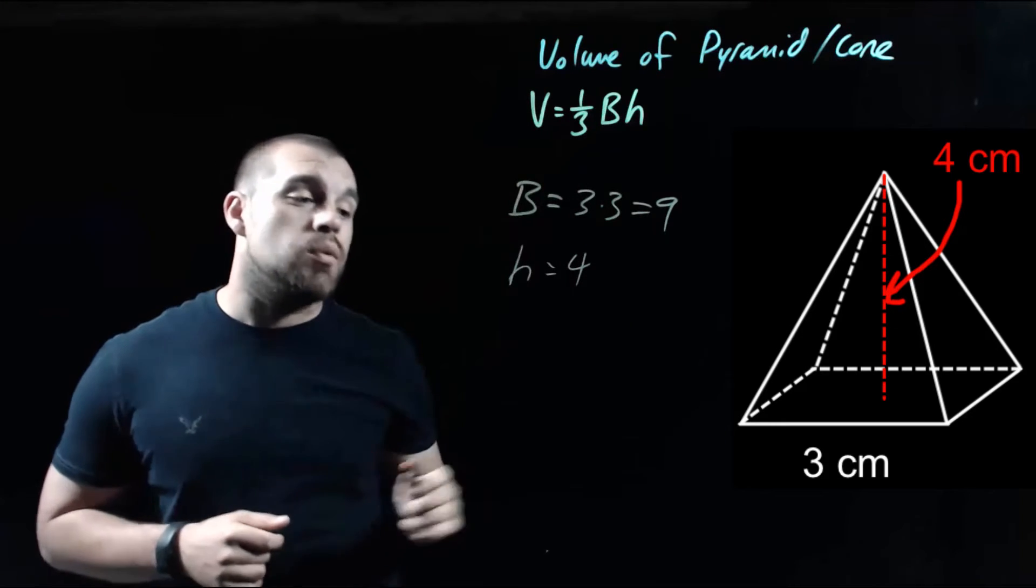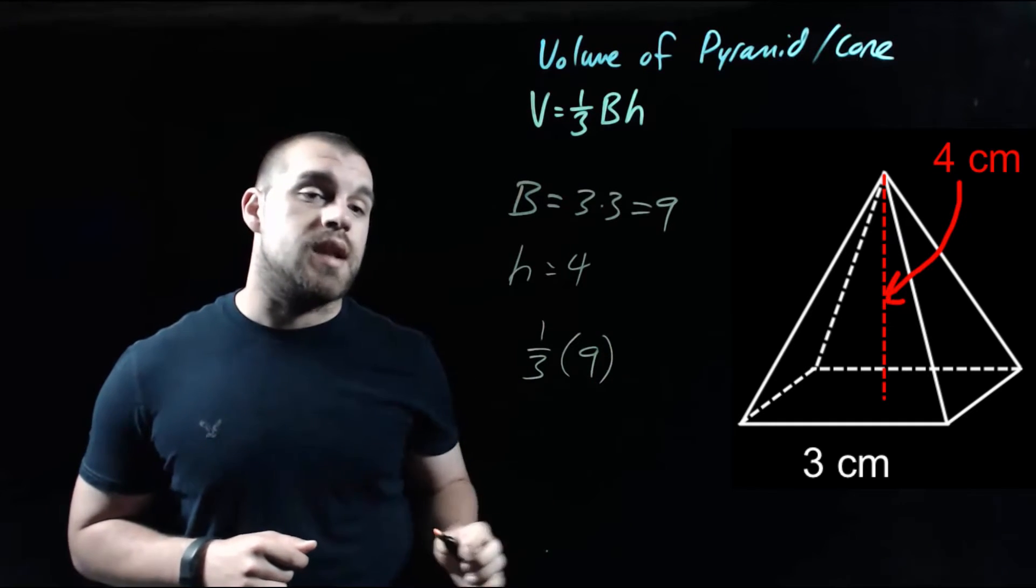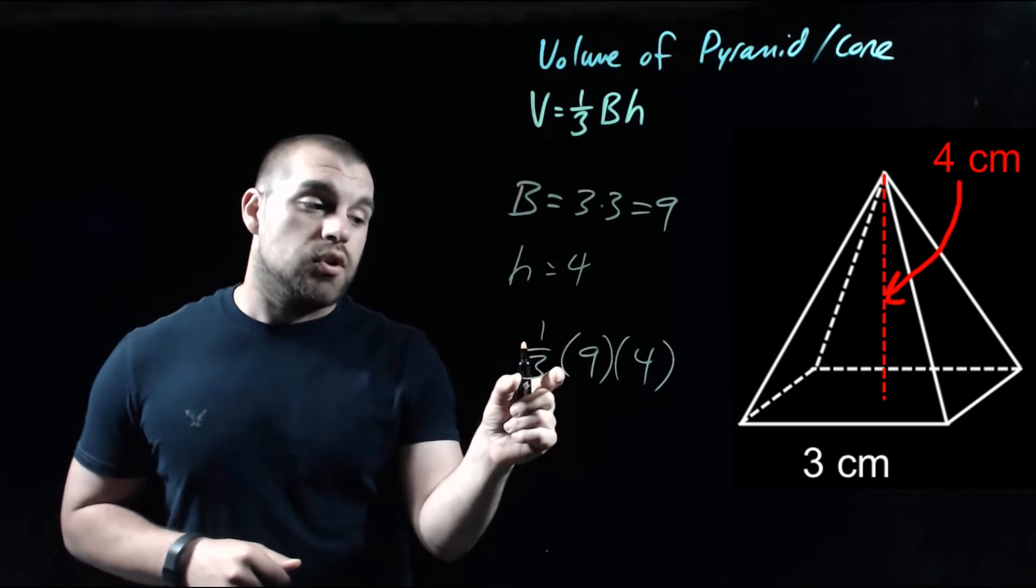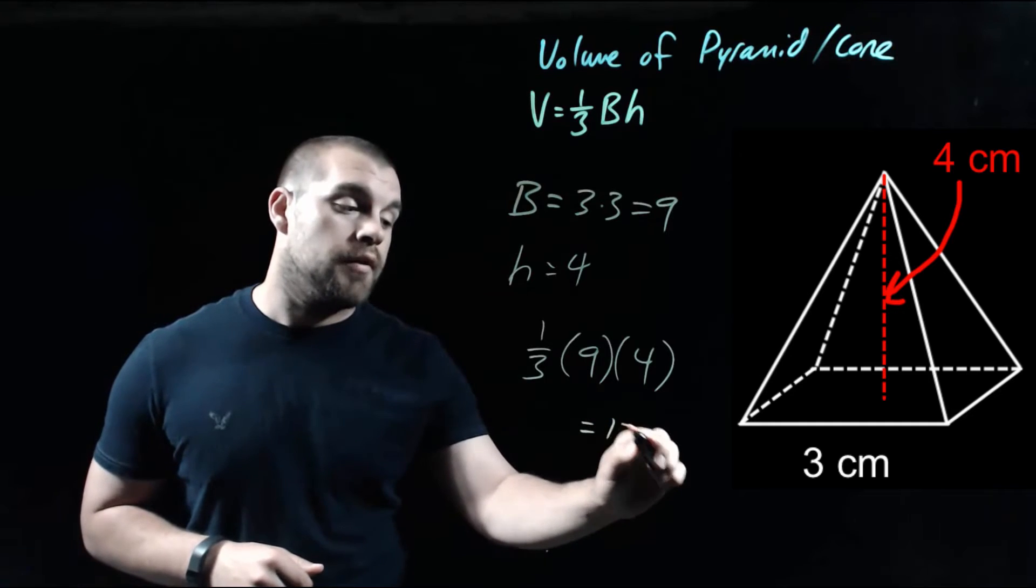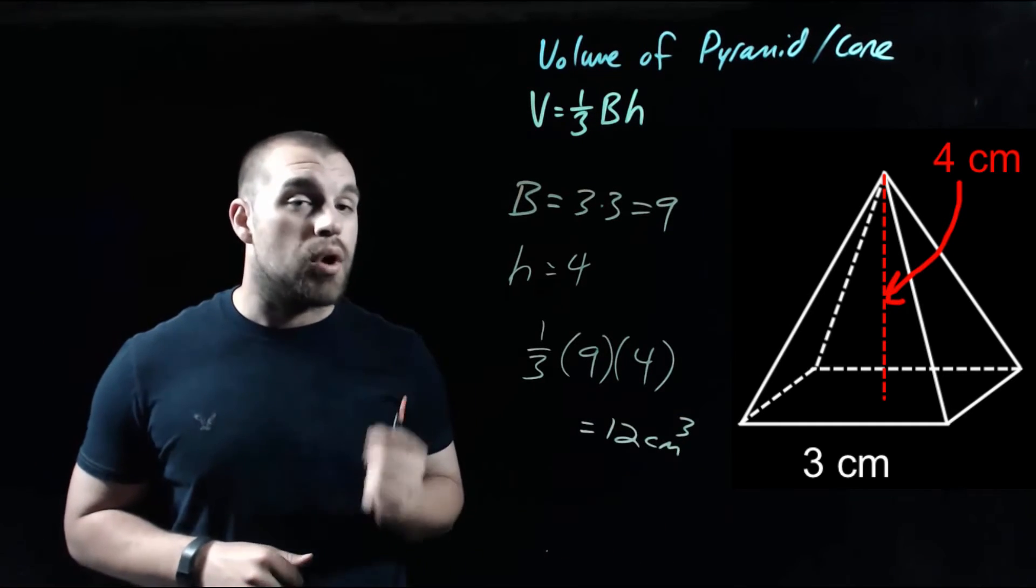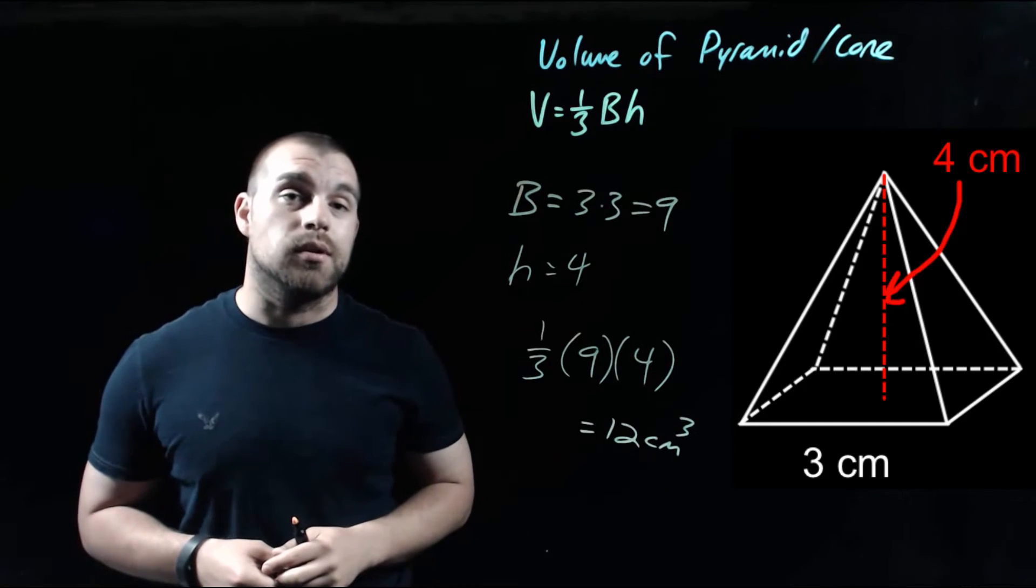If we look at plugging these into our formula, we're going to go one third times the area of the base, which is nine, times the height of our pyramid, which is four. Now if we do one third times nine, we get three. And then if we do three times four, we end up with a volume of 12 centimeters cubed. Remember anytime we're dealing with volume problems, it gets a cubed on the label.